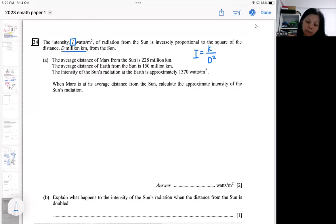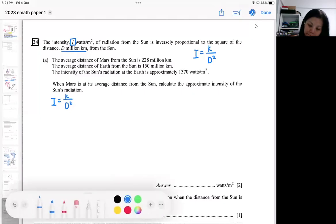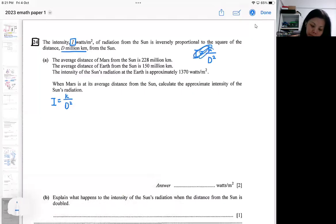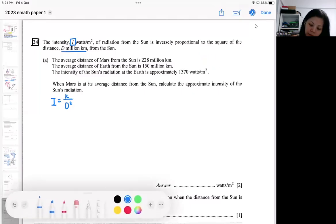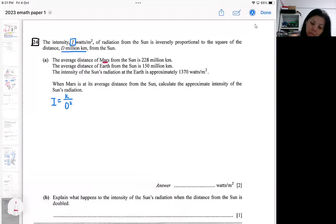So then they gave you some information. Maybe I should write it down first. So the first one is for Mars, Mars from the sun. So d is like 228.